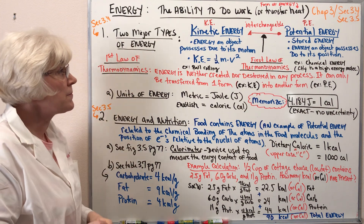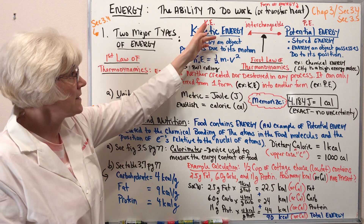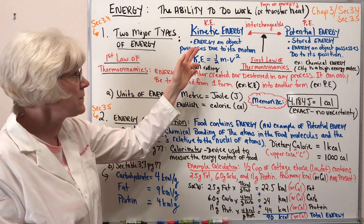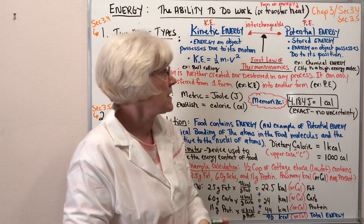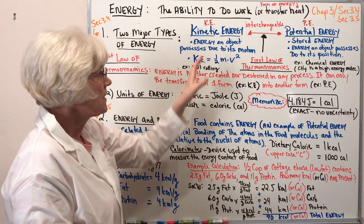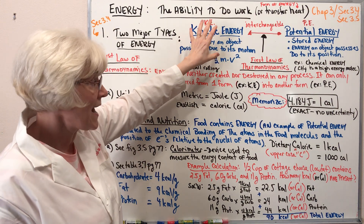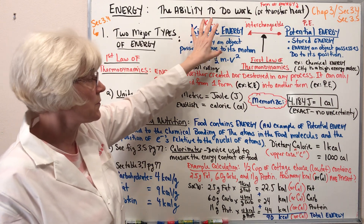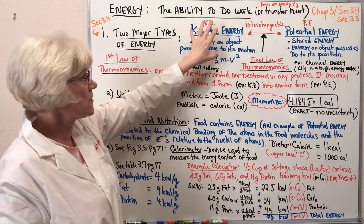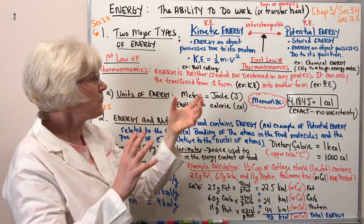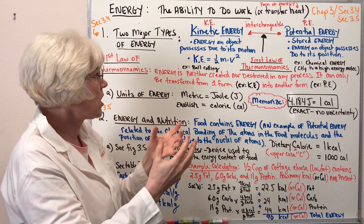There are two major types of energy: kinetic energy, abbreviated K.E., and potential energy, abbreviated P.E. Energy will be expressed in one of these forms or the other. Let's take a look at the form you're probably more familiar with and able to grasp as a concept.